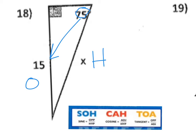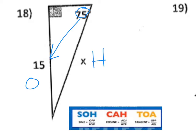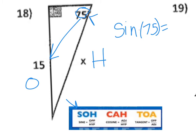I look for the rule that has an O and an H in it. I notice that CAH has an A and an H, TOA has an O and an A, so of course I'm going to be using SOH again. That means the SINE of the angle measure given — SINE of 75, because that's the angle measure — equals O over H.